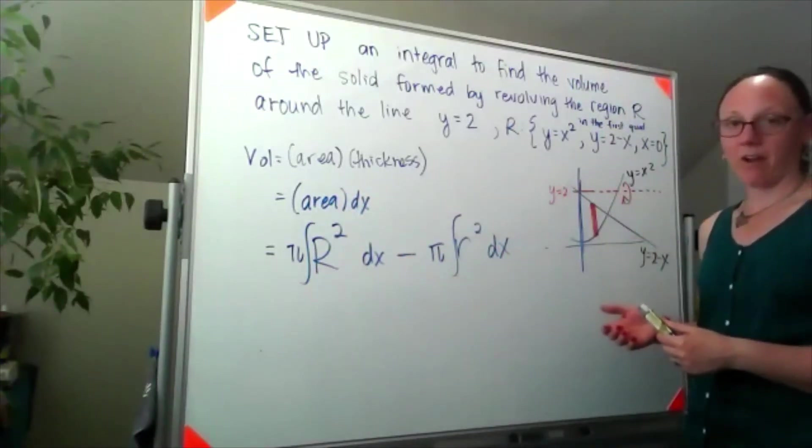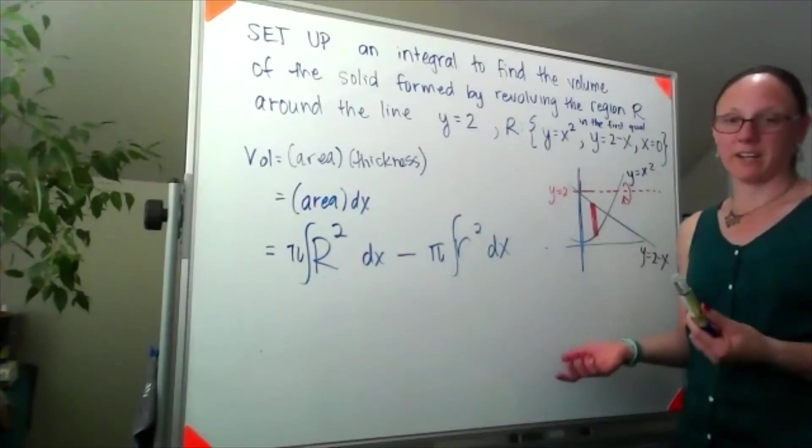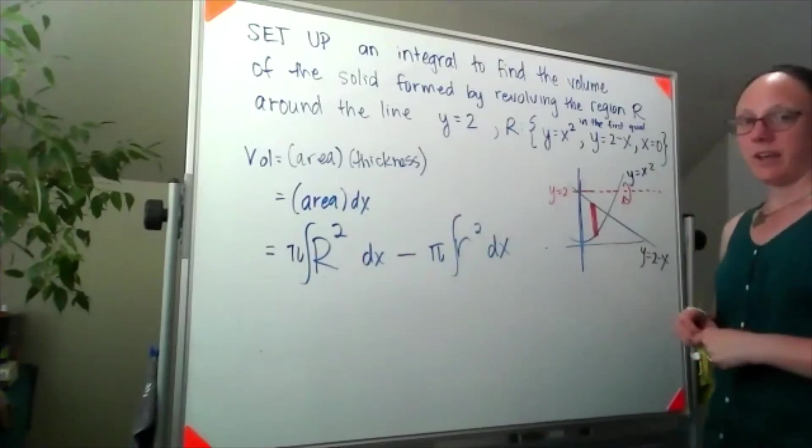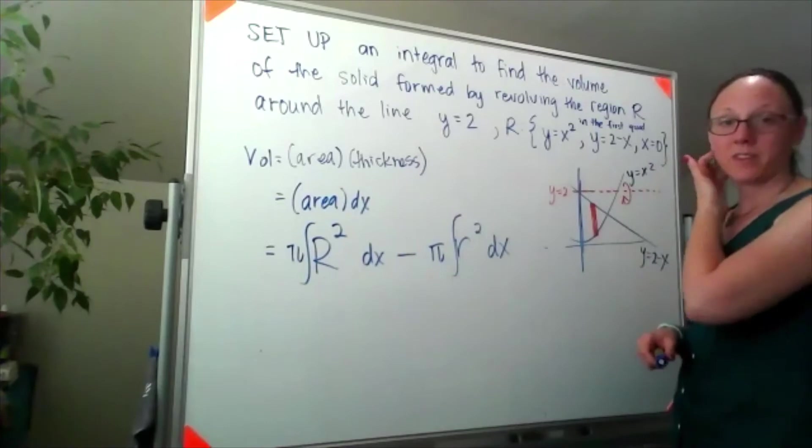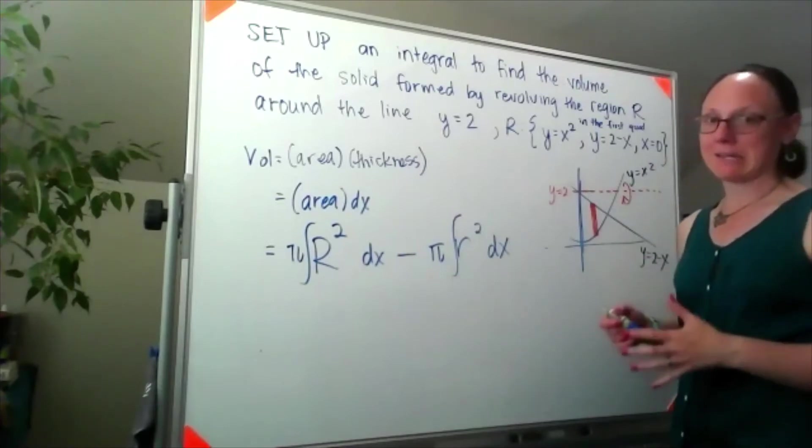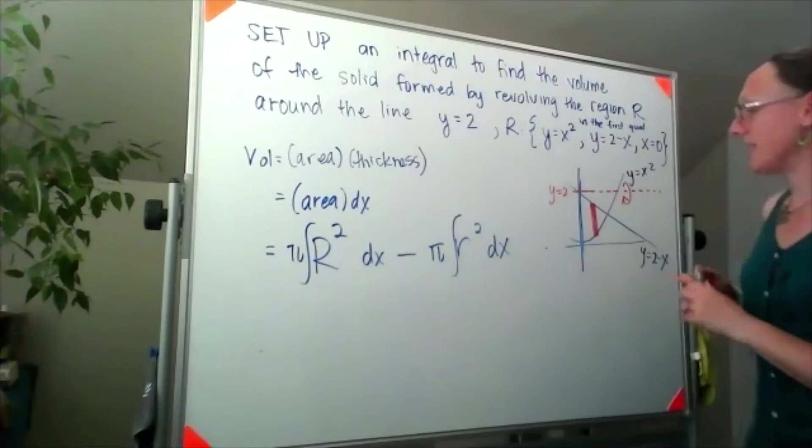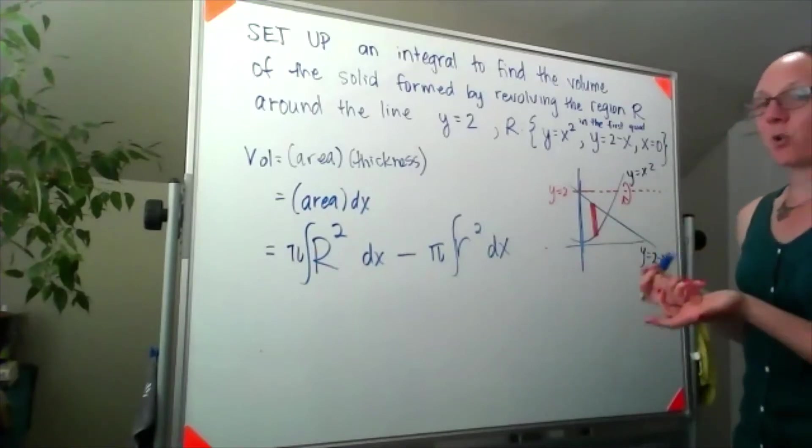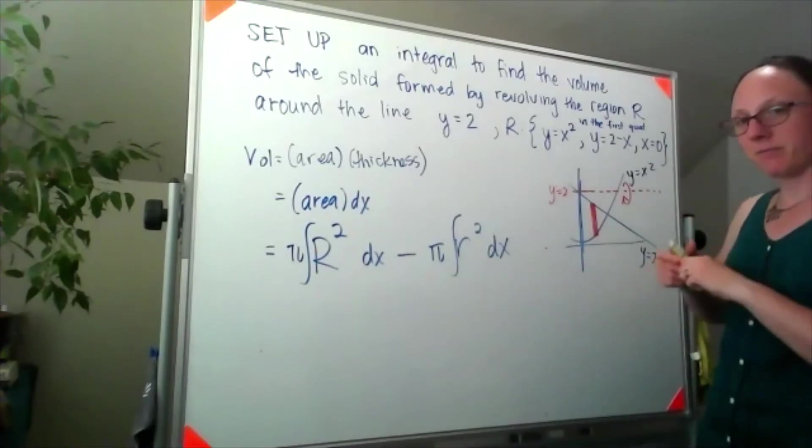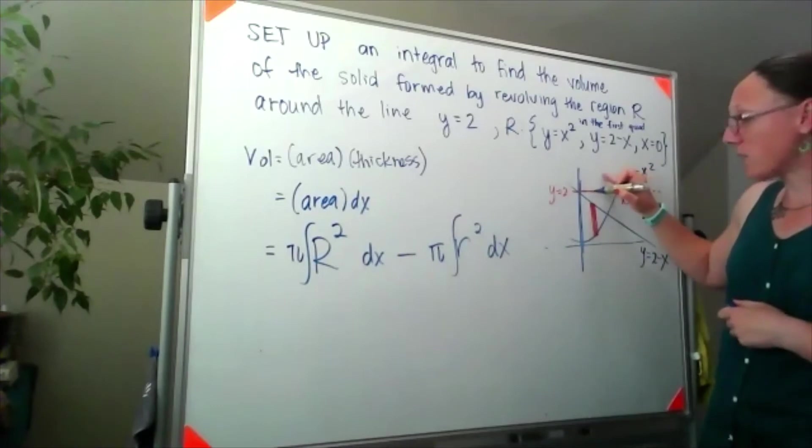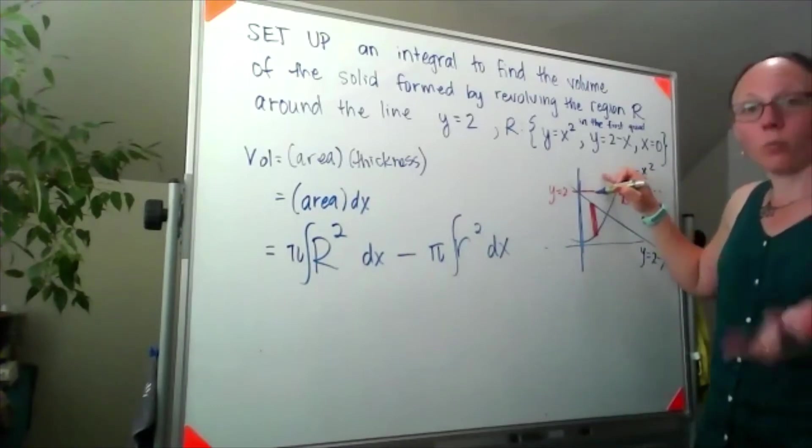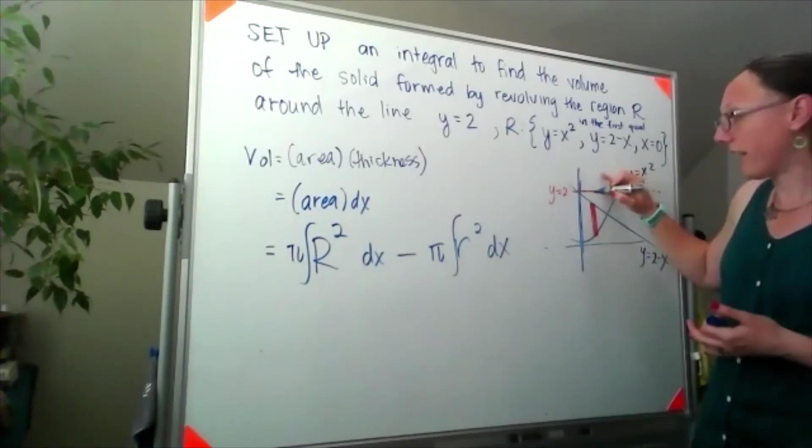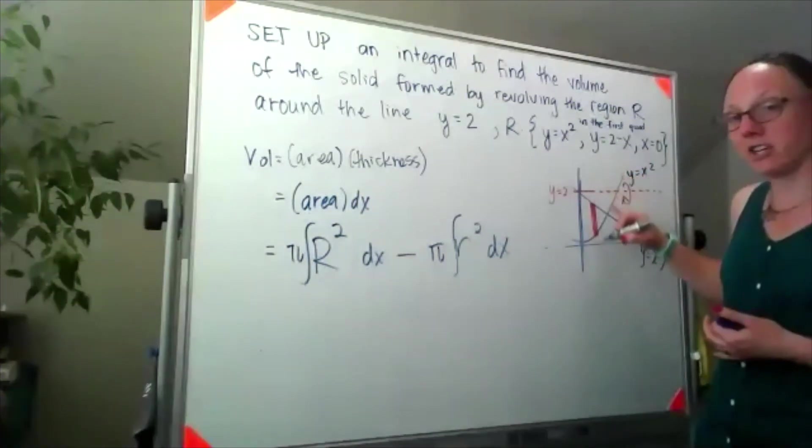Next thing to figure out: let's figure out the big radius, little radius. And I chose a problem that's going to be slightly messy. I did that on purpose. So our small radius, I start at the middle or what I'm spinning around and I go until I hit the closest edge of our cross-section.